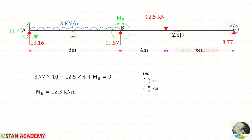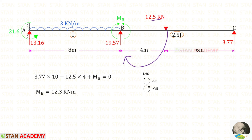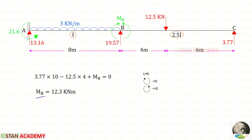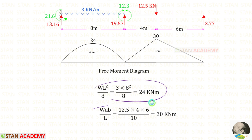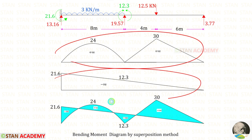Now, taking a moment about B from point C to find the moment at B, MB. Assuming MB is a hogging moment: RC acts anti-clockwise (positive) with distance 10; the point load acts clockwise (negative) with distance 4; MB acts anti-clockwise (positive). We get a positive value, confirming MB is a hogging moment. Using these formulas, we can draw the free moment diagram. Using MA and MB, we can draw the end moment diagram. By combining these two, we draw the bending moment diagram by the superposition method.